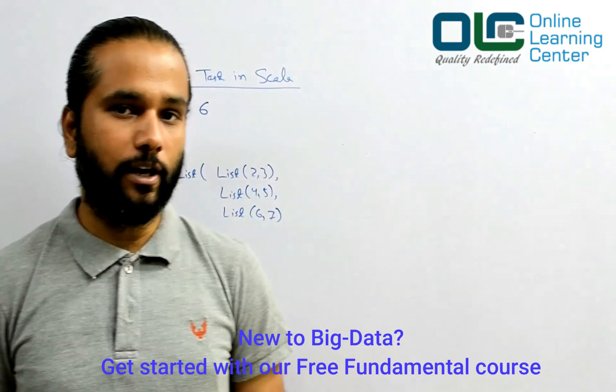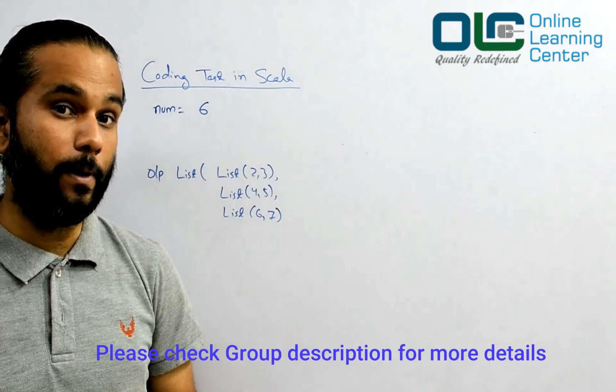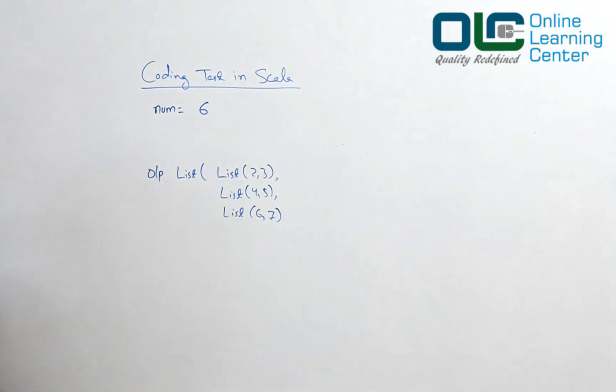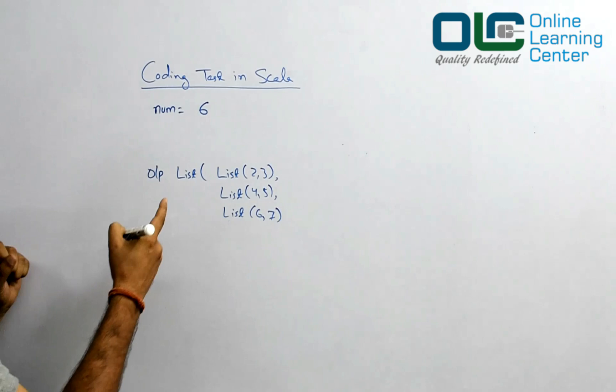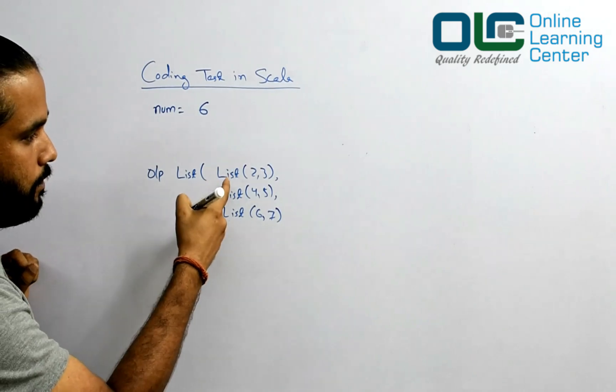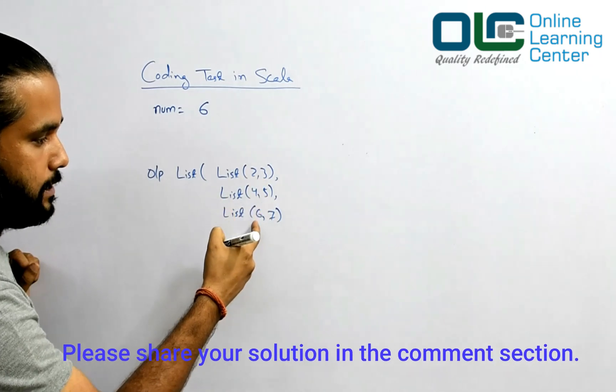Okay, so now let's try to solve one more problem. This problem was asked to one of our students at PayPal in the coding round. Given a number, let's say six, it could be anything. All you need to find out is a list of list of two and three, four and five and six.